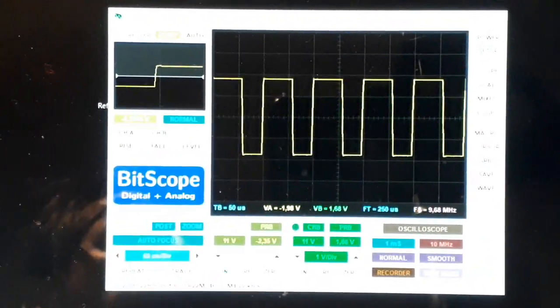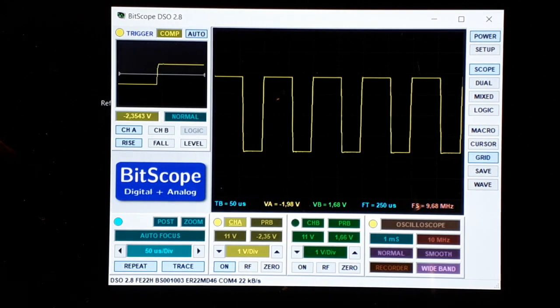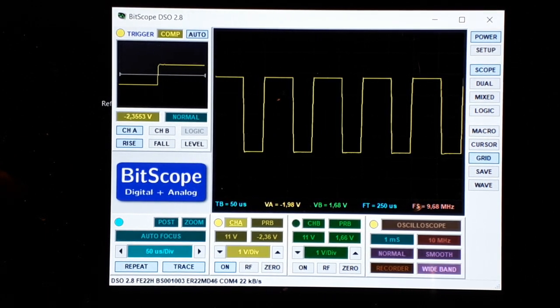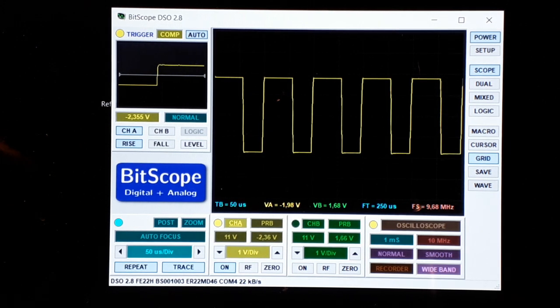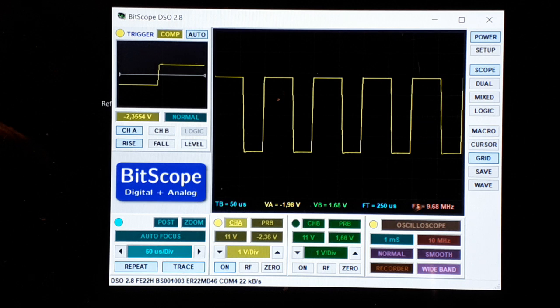This is a quick overview on the scope functions of the Bitscope BS10, a USB powered 100 MHz mixed signal scope with two analog oscilloscope channels and eight logic analyzer channels.